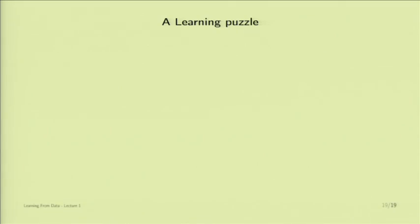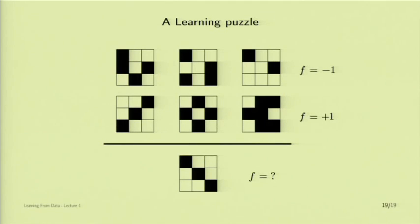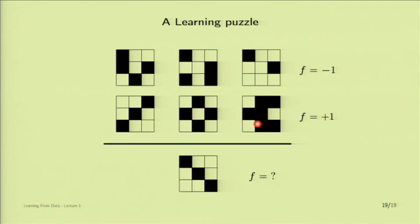Let's start the game. The training examples above the line show the input as a three-by-three pattern — really just nine bits of information, ones and zeros, black and white. For three of these inputs, the value of the target function is minus one. For three other inputs, the value is plus one. This is your training set. Now you should learn the function, and when you're done, could you please tell me what your function will return on this test point — is it plus one or minus one? I'll give everybody 30 seconds.